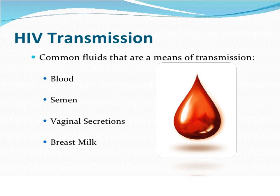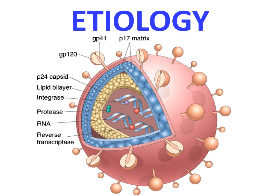HIV is a non-transforming retrovirus in the lentivirus family. It causes immunodeficiency by destruction of T-cells. There are two main genetic forms: HIV-1 and HIV-2. HIV-1 is associated with AIDS in the United States, Europe, and Central Africa, while HIV-2 causes a similar disease in India and West Africa.